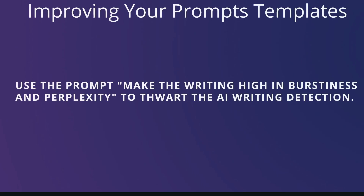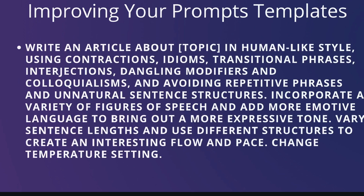Here are some other effective prompts to help get higher quality content and reduce the likelihood of it being detected by an AI detection tool. In your prompt, you can include: 'Make the writing high in burstiness and perplexity.' This allows the AI to write in a more human-like format, reducing the chances it'll be flagged as AI content. There's also another effective prompt I found on the YouTube channel 'Words at Scale' — it's very specific in structure and how it directs the AI to write content, making it much more human-like.